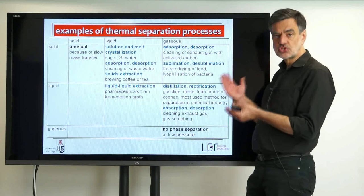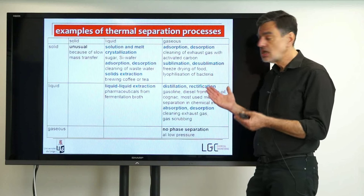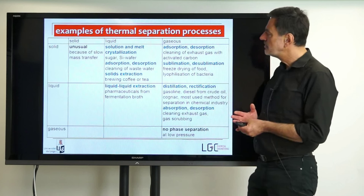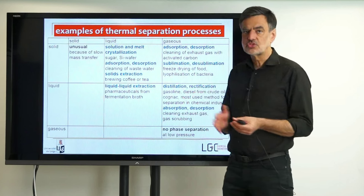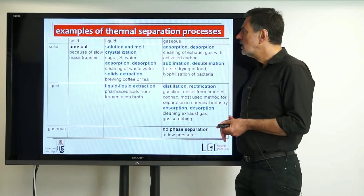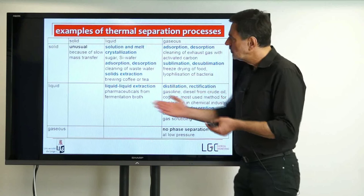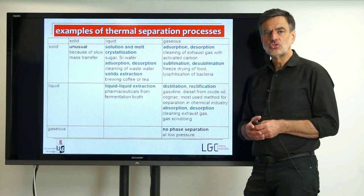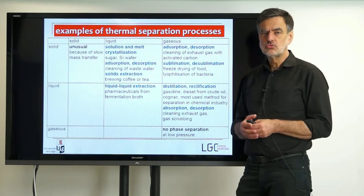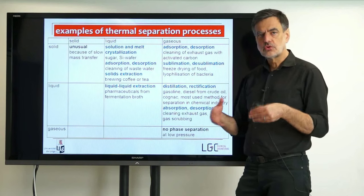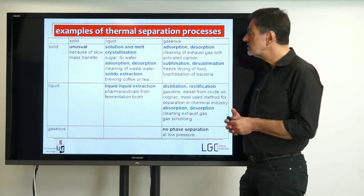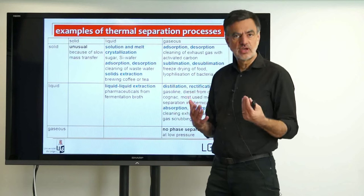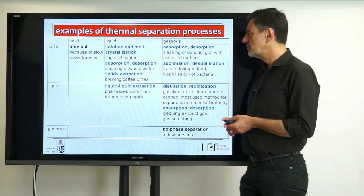We can ask ourselves which combinations make sense, and of course we only have to use half of that matrix because the other half is symmetrical. Starting with the first case, solid and solid, which is actually not feasible for thermal separation processes because the mass transfer is much too slow in solids, so you don't find that in separation processes.